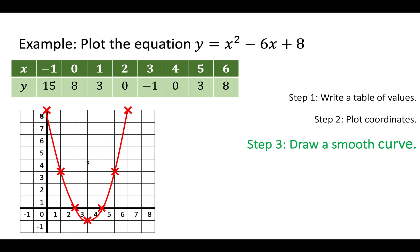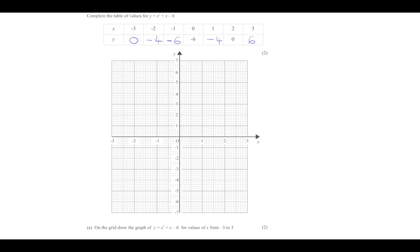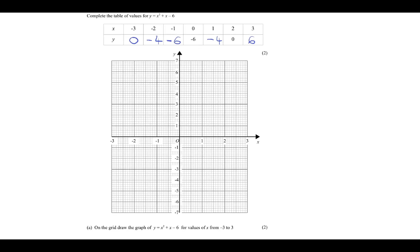Okay. It is possible for it to look like an N shape upside down. And that will be if there's a negative number in front of the x squared. So it could be a U or it could be an N shape.